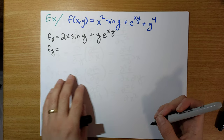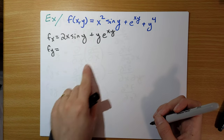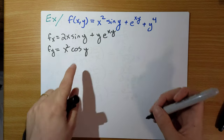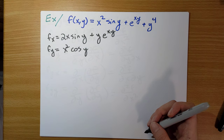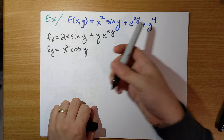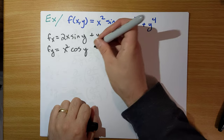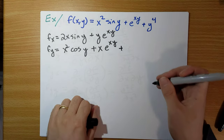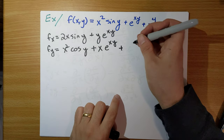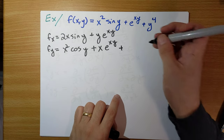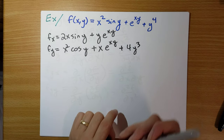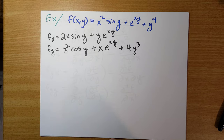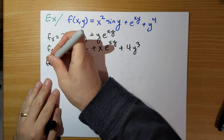The y partial derivative: the derivative of sin(y) is cos(y), and x² looks like a constant from the lens of y. Then x is a constant again, so we get x·e^(xy), plus the partial derivative of y⁴ with respect to y is 4y³. So this is the setup — now let's go and calculate what we actually care about.